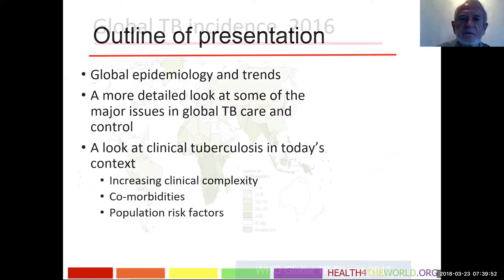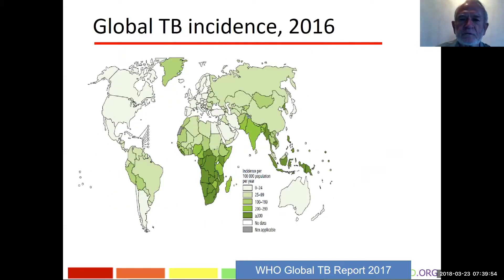This is a WHO map showing the global incidence of tuberculosis country by country in 2016. The darker colors indicate a tuberculosis case rate of over 300 per hundred thousand population — that's very high. The countries with these very high case rates are mainly in sub-Saharan Africa, and also in South and Southeast Asia.